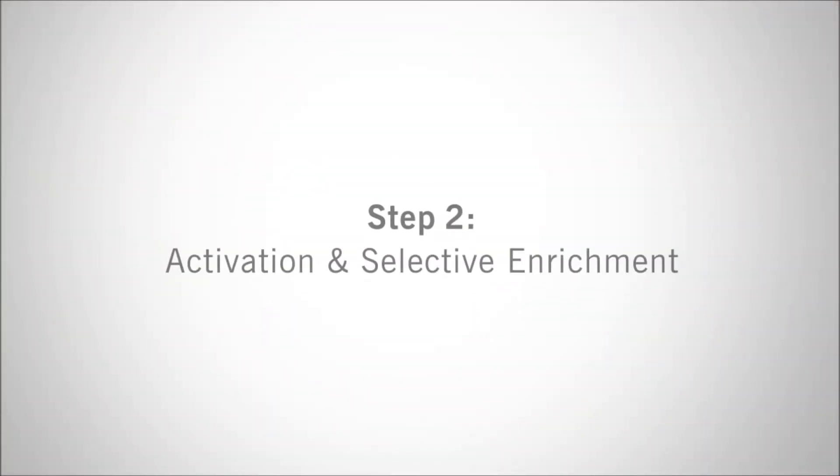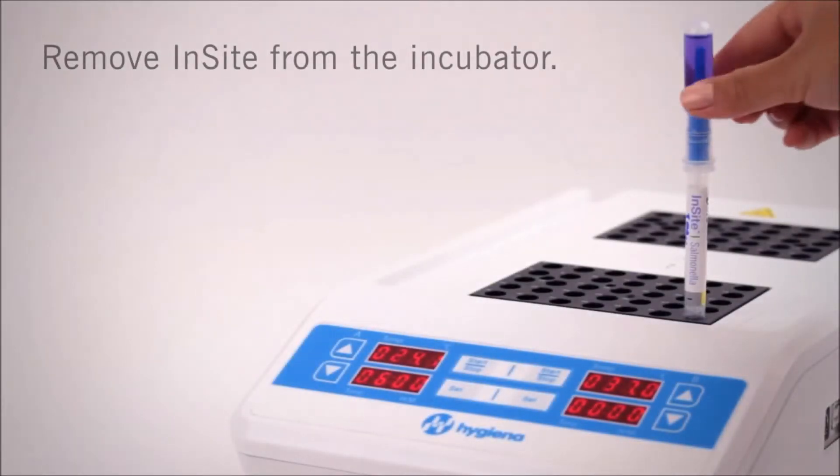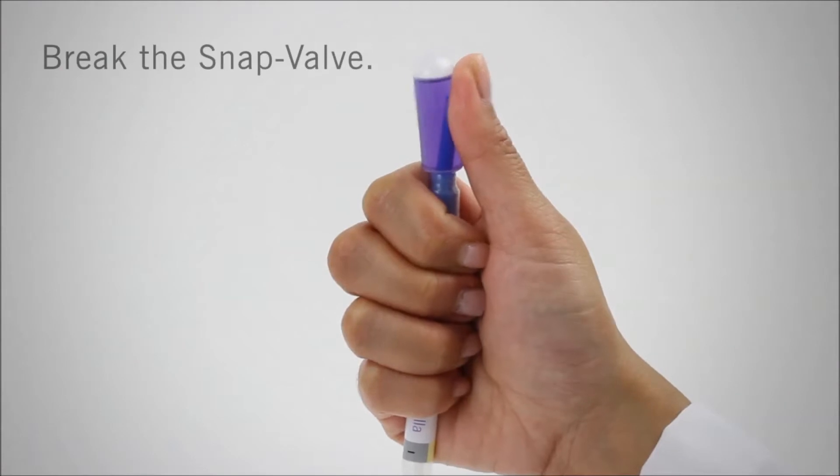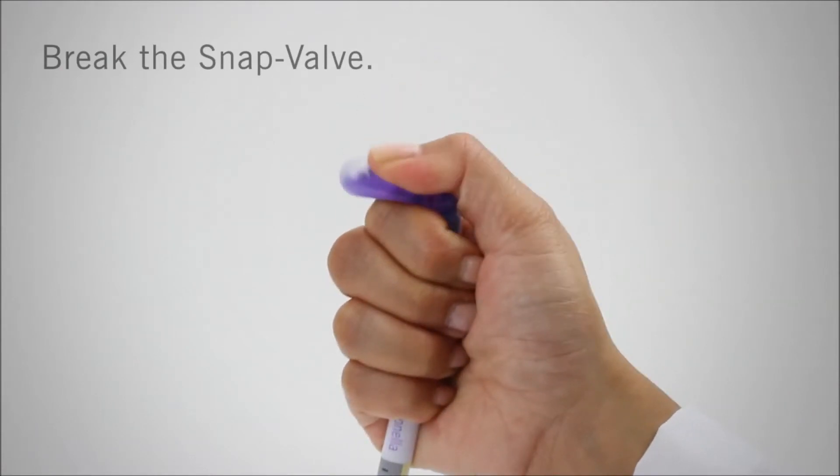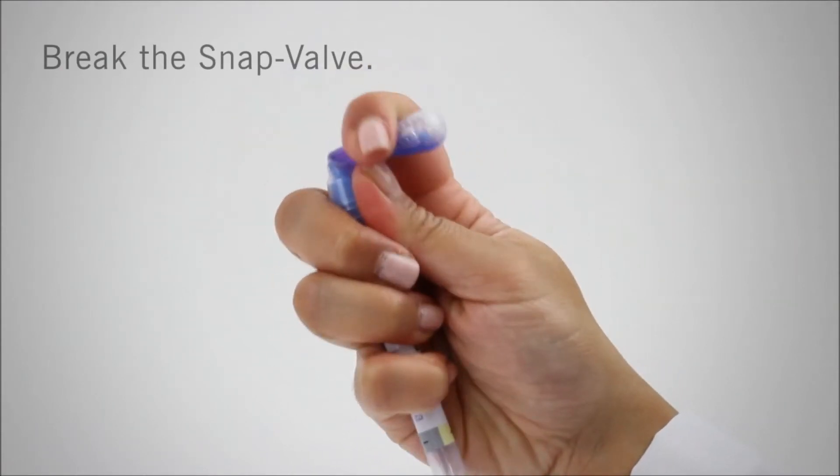The second step is activation and selective enrichment. Remove Insight Salmonella from the incubator. The easiest way to activate Insight is to hold the device in your fist and use a thumb and forefinger to break the snap valve by bending the bulb forward and backward.